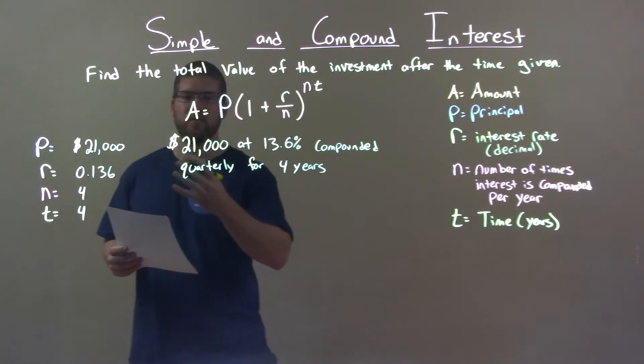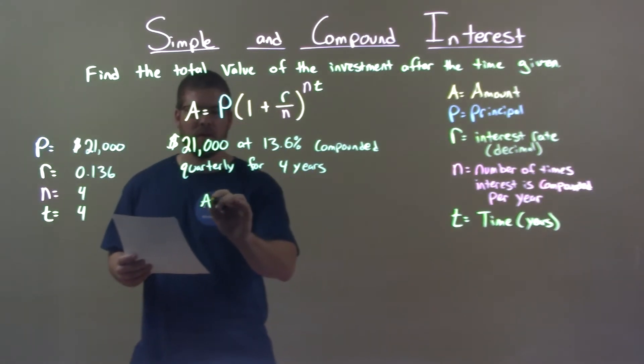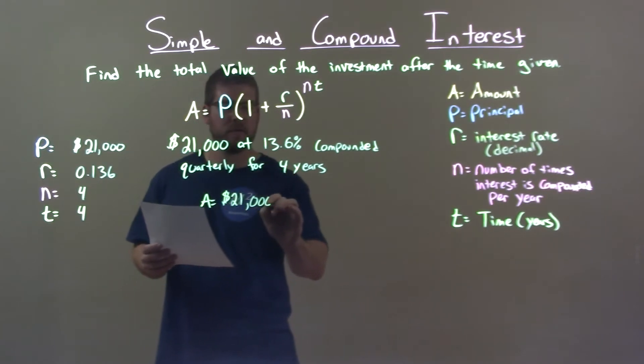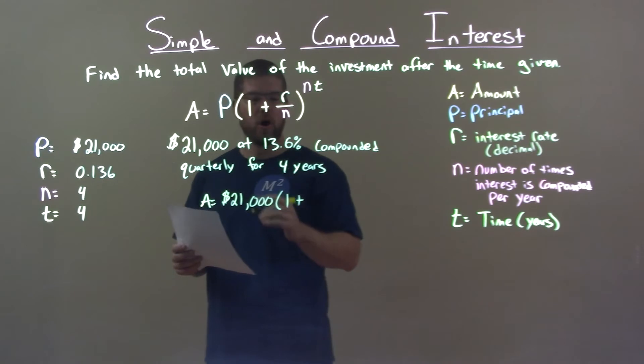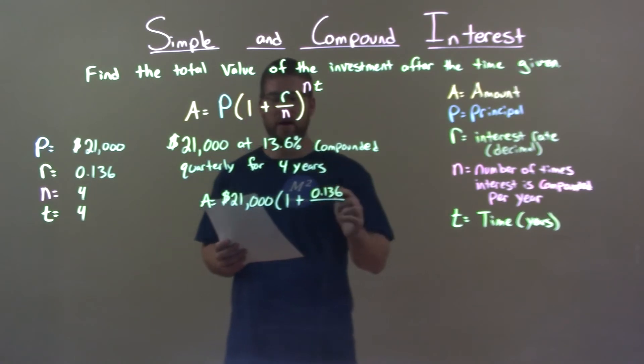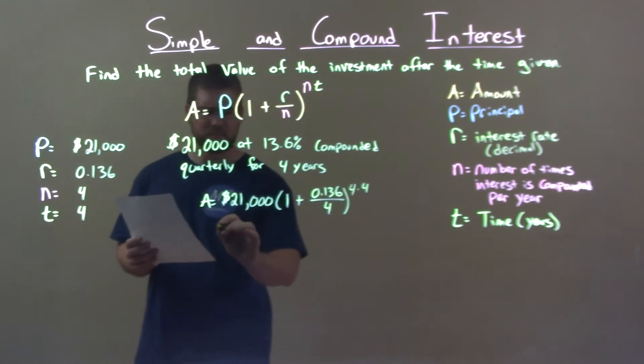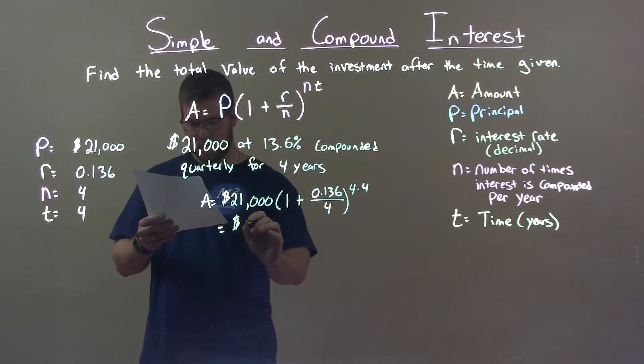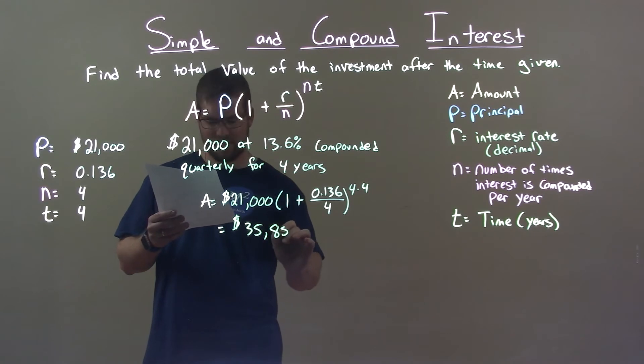With that, we need to plug that into our formula for compound interest. A equals my principal, $21,000, multiply that by 1 plus r, my interest rate as a decimal, 0.136, over the number of times we compound in a year, quarterly being 4, to the exponent of that 4 times the number of years, which is also 4. This gives us a total value of our investment after 4 years to be $35,254.85.